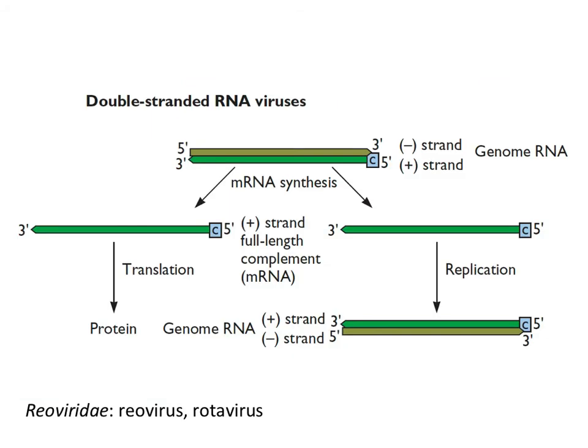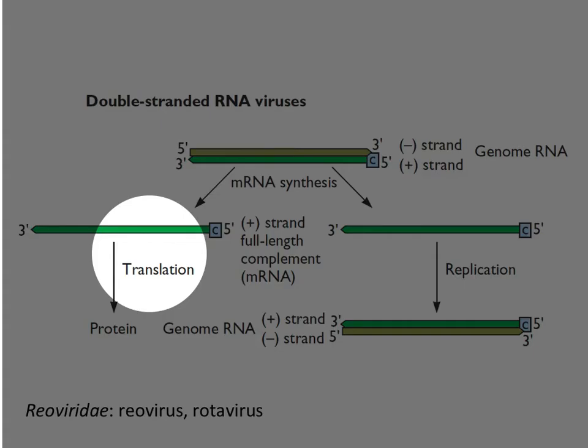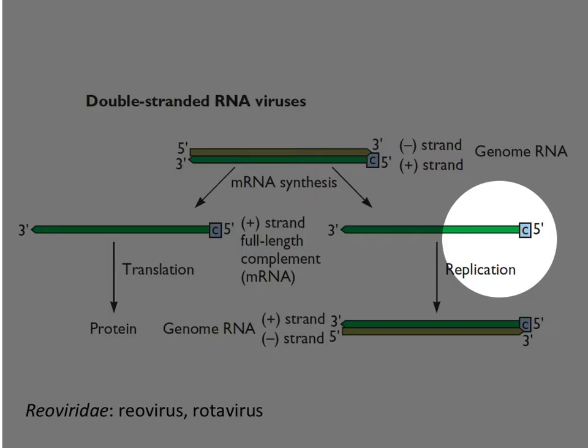One more class of viruses that have RNA genomes: the double-stranded RNA viruses. These have to also bring in an enzyme, because the plus part of the double-stranded RNA can't be accessed by ribosomes. So what these viruses do is bring in a polymerase. The polymerase makes mRNA from the double strands, which can be translated, and then eventually it will take some of those mRNAs and make them double-stranded to make new genome segments.